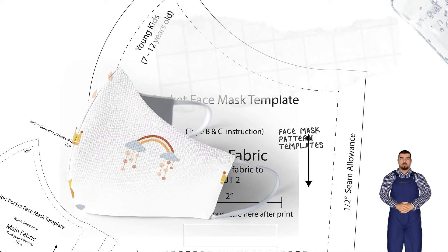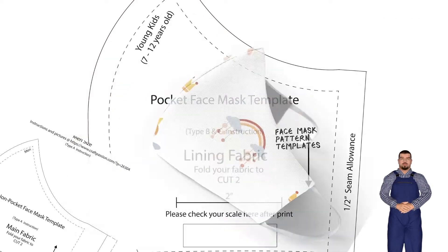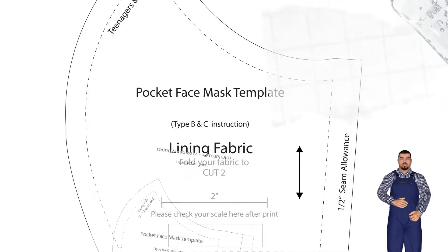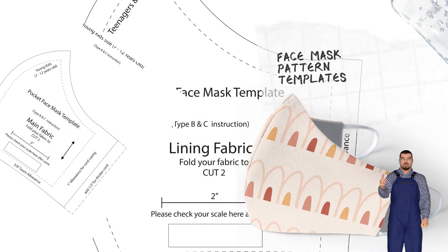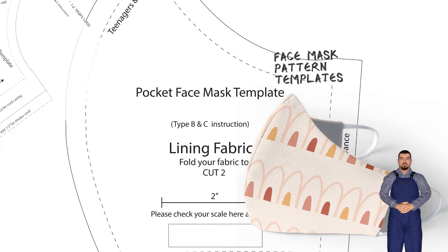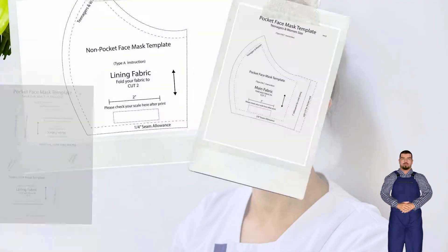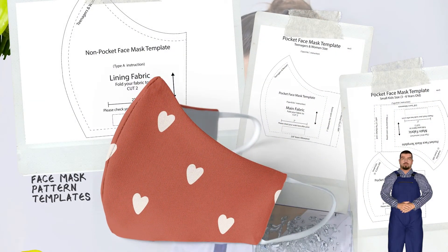2. Ordinary Face Mask Sewing Pattern with 1/4 inch seam allowance included. Use only on Type A: men, women/teenagers, kids 7 to 12, kids 3 to 6.